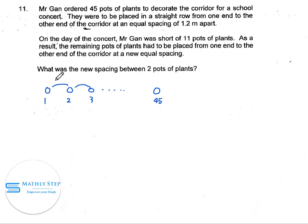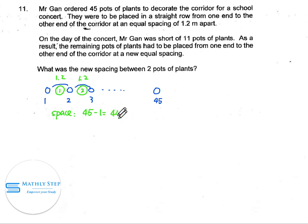Originally, the spacing between plants is 1.2 meters. So this is spacing 1, this is spacing 2. With a total of 45 plants, the number of spaces in between will be 45 minus 1, equal to 44. Because we need 2 plants to form 1 space, so there are 44 spaces in total. So we can find out the length of the corridor: it is 44 times 1.2, which equals 52.8 meters.